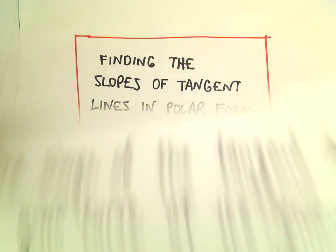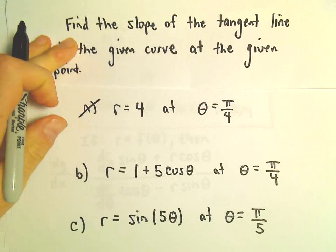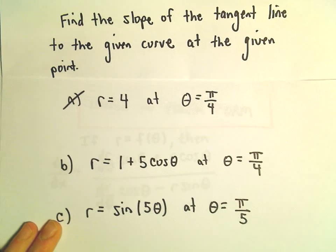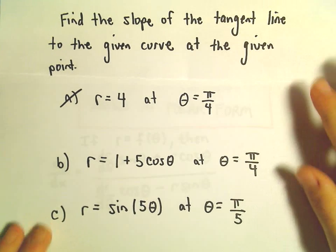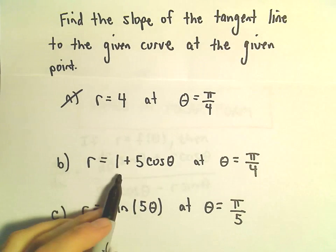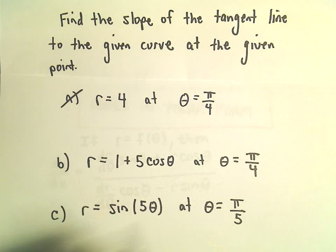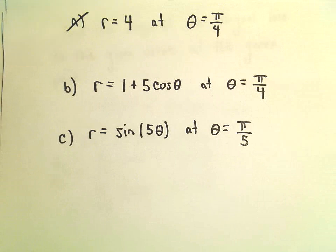Another example here of finding the slope of a tangent line when our curve is given in polar form. We have r equals 1 plus 5 cosine theta, and we'll find the slope of the tangent line at theta equals pi over 4.